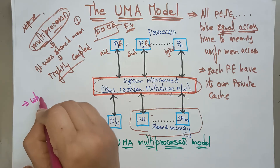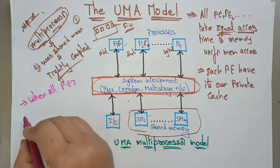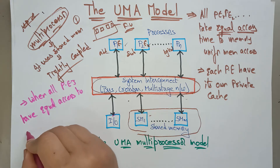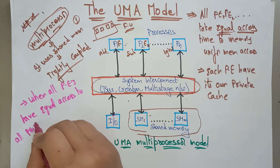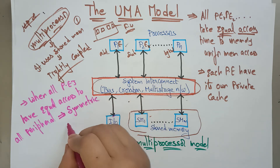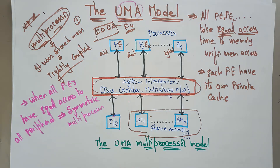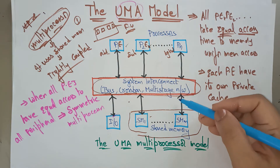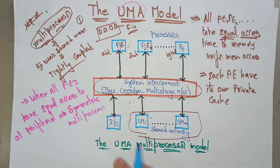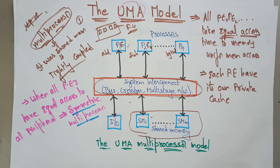When all processing elements — PE1, PE2, and so on — have equal access to all peripheral devices, we call it a symmetric multiprocessor. In the UMA model, if all processing elements have equal access to all peripherals whenever they require, then it is a symmetric multiprocessor.